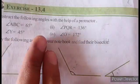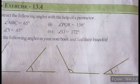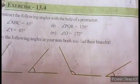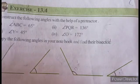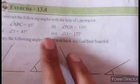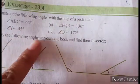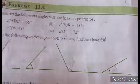First, construct the following angles with the help of the protractor. I am going to draw the angles with the protractor. First, angle ABC is equal to 65 degrees. Second, angle PQ is equal to 136 degrees. And angle Y is equal to 45 degrees. And angle O is equal to 172 degrees.